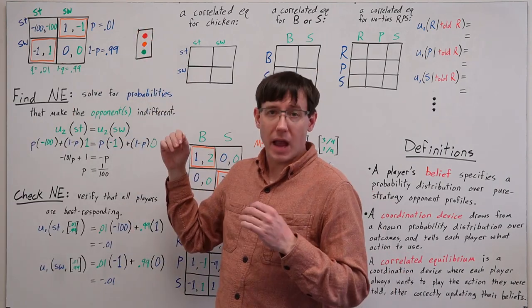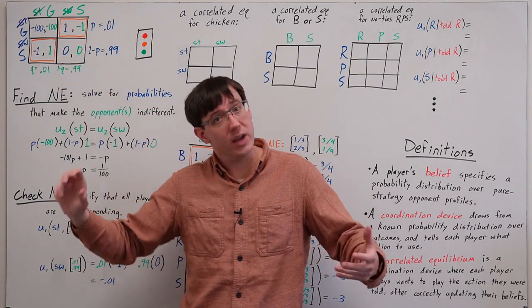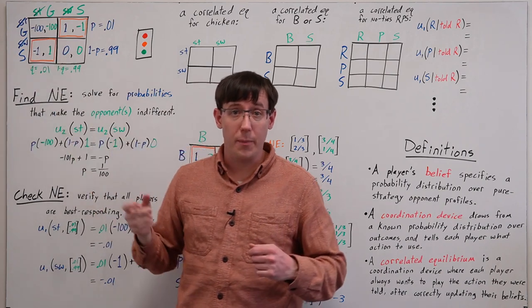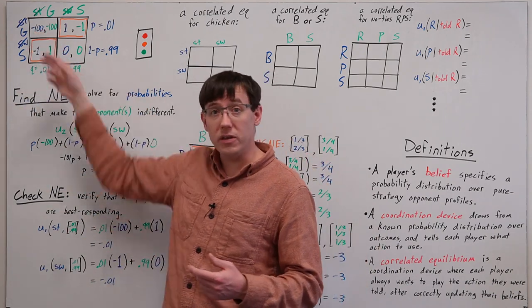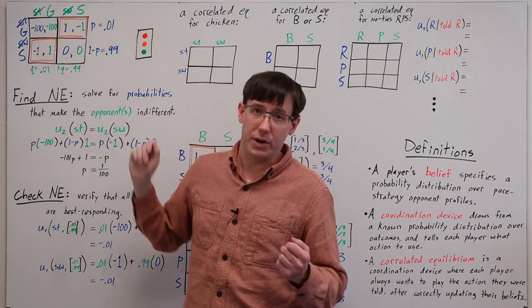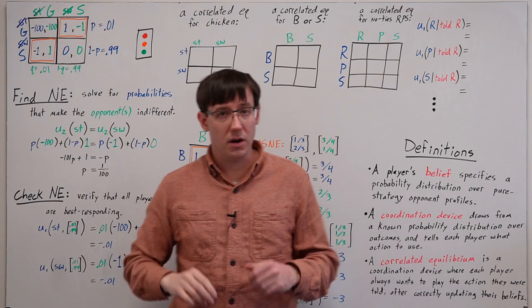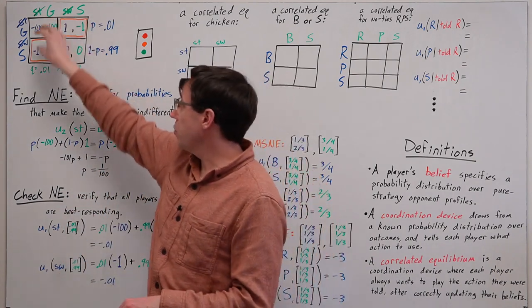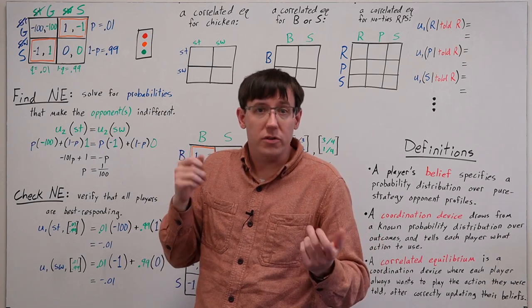Namely, the traffic light. If we slightly relabel the actions of this game, we see that this same payoff matrix can represent the familiar situation of two cars meeting at an intersection. The job of the traffic light is to coordinate their behavior so that we never end up in the both-go outcome where they could crash, and that we alternate between the go-stop and stop-go outcomes. We'd like to allow our game-theoretic modeling to include this sort of coordination device, which leads us to the concept of a correlated equilibrium. We can formalize the idea of a coordination device as specifying some probability distribution over the outcomes of a game, and then telling each player, when it draws from that distribution, what action they're supposed to play.